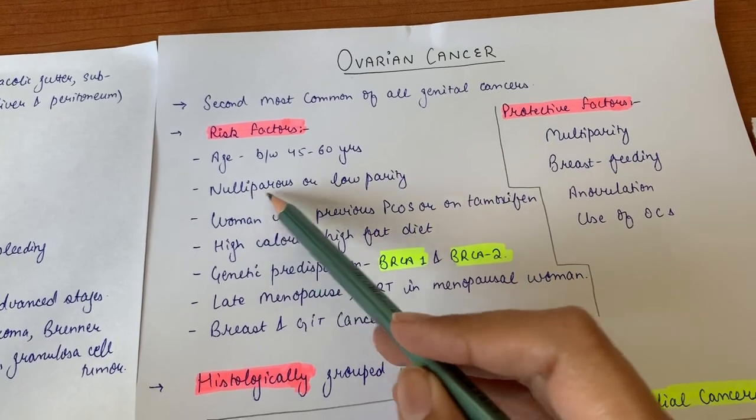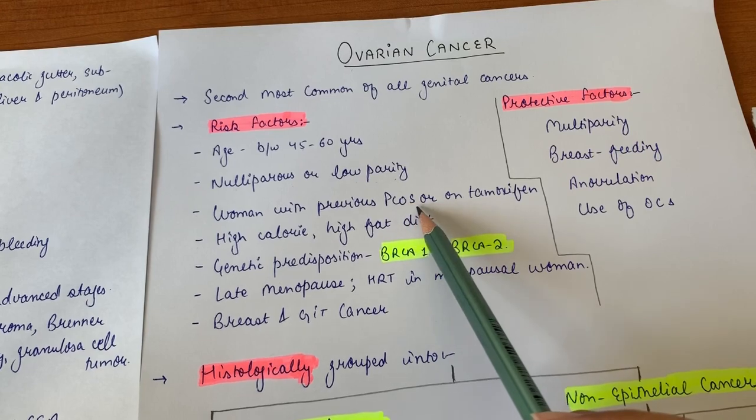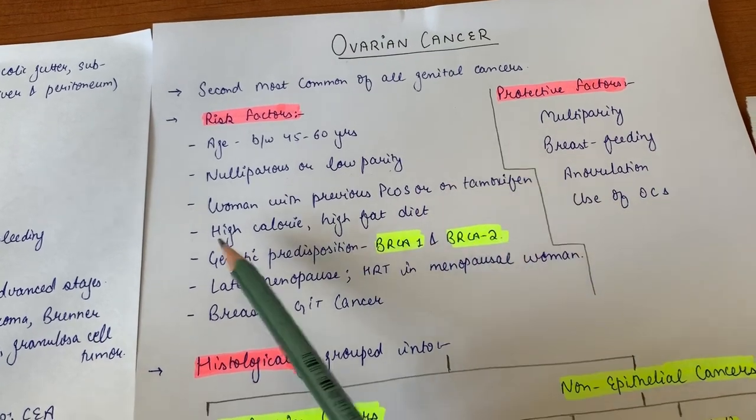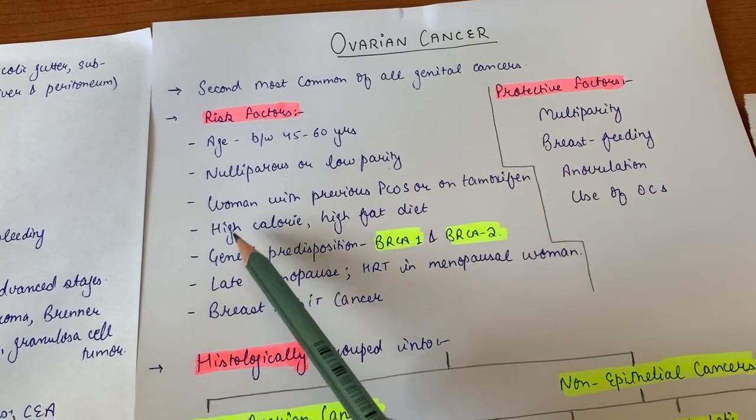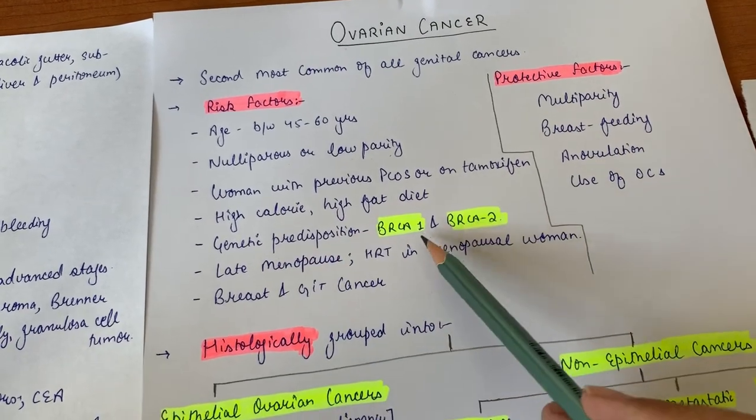Women are usually nulliparous or of low parity. Women with previous polycystic ovarian syndrome or on tamoxifen, which is a drug used for breast cancer, are at risk. High calorie and high fat diet also increases risk.